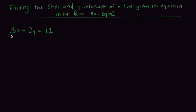So let's use an example of 3x minus 2y equals 12. That's the line that we've been given in the form ax plus by equals c.